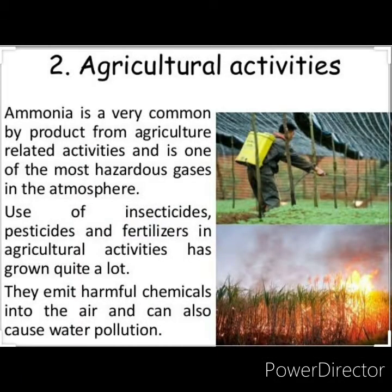Construction and agricultural activities: potential impacts arising from construction debris would include dust particles and gaseous emissions from the construction sites. Likewise, the use of ammonia for agriculture is a frequent byproduct that happens to be one of the most dangerous gases affecting air.